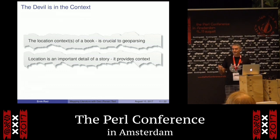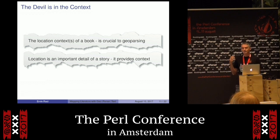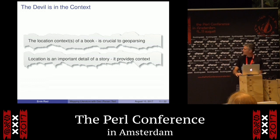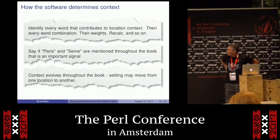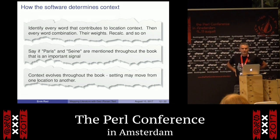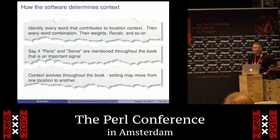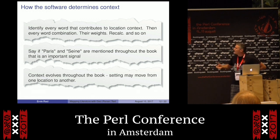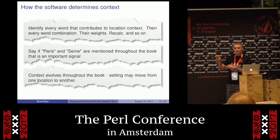So the devil is in the context — the context changes. Your program has to understand what kind of context you're in, and the context changes throughout the book. Maybe in one particular paragraph it's talking about Paris and Rousseau and Jacques, and in another you'll be talking about Bordeaux. The location is also what provides context, so these two feed each other. If Paris and certain markers are mentioned here and there, that's a signal that can be taken into consideration. You can also see how the setting moves by the distribution of these markers throughout the text.